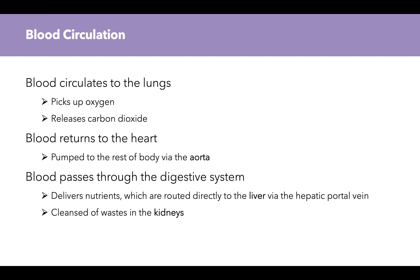Here is the process of blood circulation written out. Blood circulates to the lungs, picks up oxygen, and releases carbon dioxide. Blood returns to the heart and is pumped to the rest of the body via the aorta. Blood passes through the digestive system, delivers nutrients, which are routed directly to the liver via the hepatic portal vein. Then the blood is cleansed of waste in the kidneys.